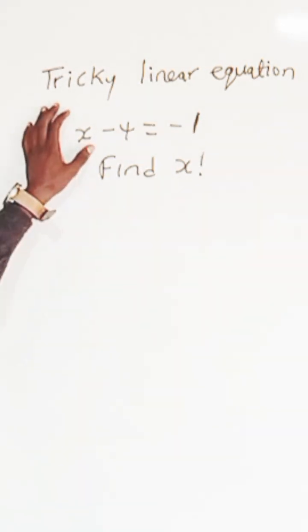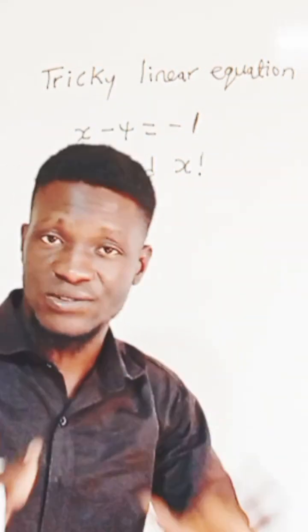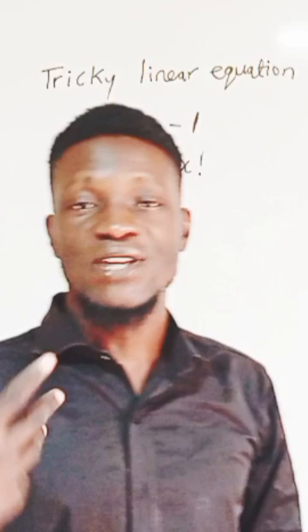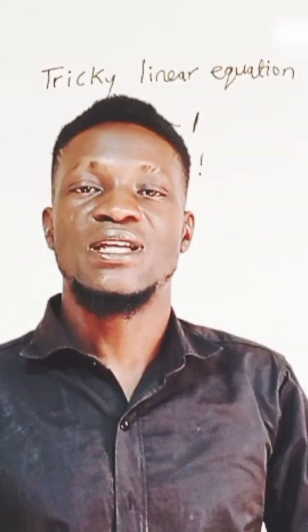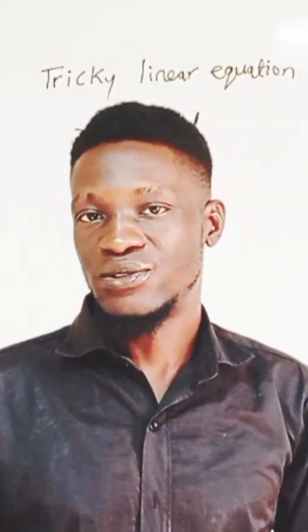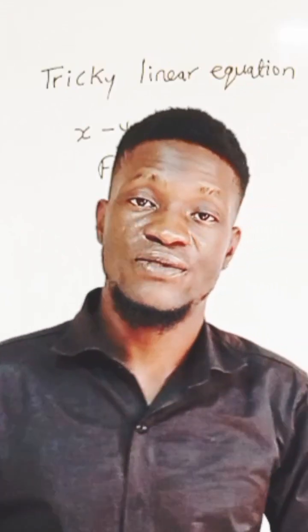The first thing is to get the value of x. After we get the value of x, then we will think of how to get the value of the factorial. So let's first get the value of x.